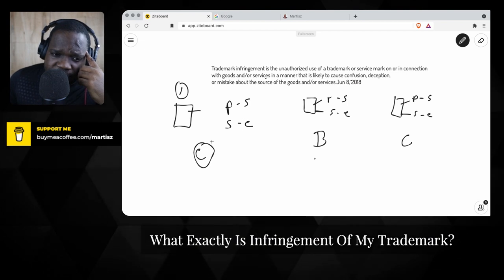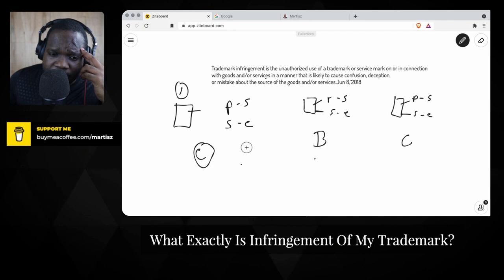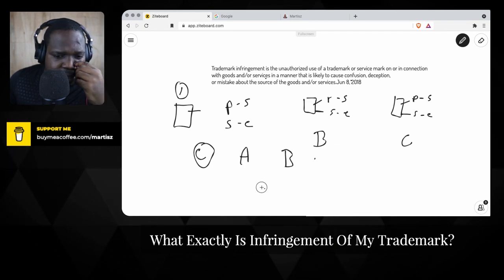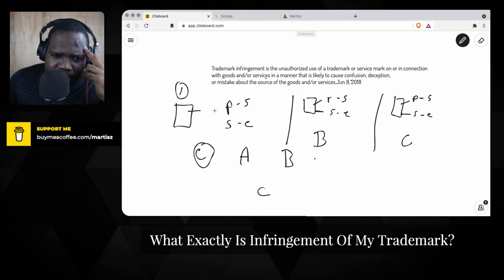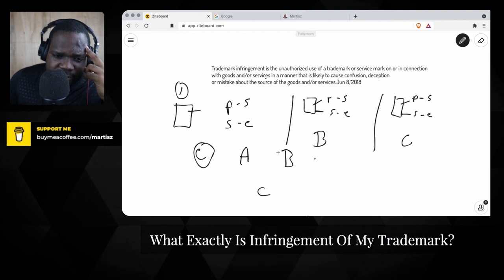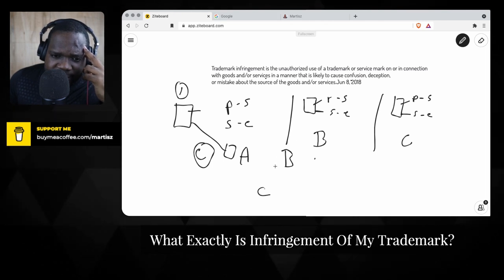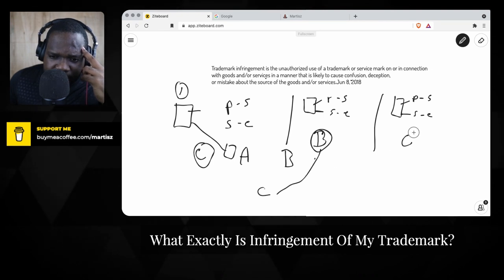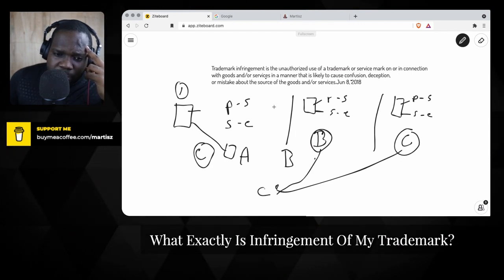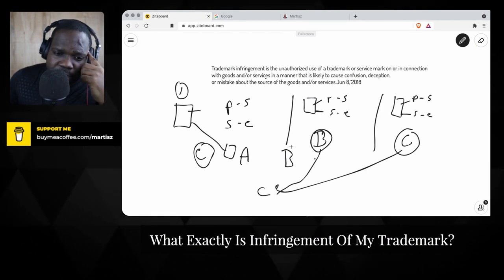In this case, when you talk about intellectual property, you always have person A, B, and C. Let's say we have three situations here. B is the trademark holder, and A and C are using the trademark without permission. Because there is trademark infringement, B can sue A and C.